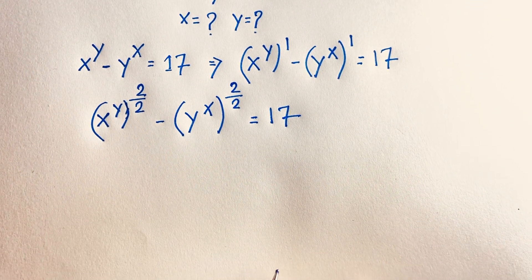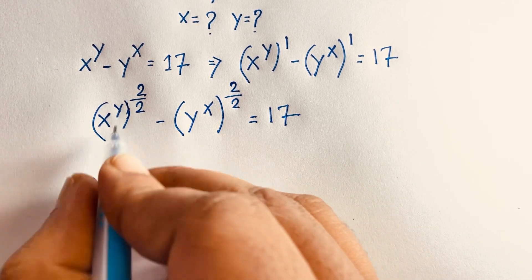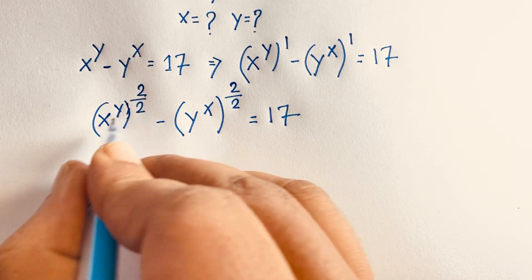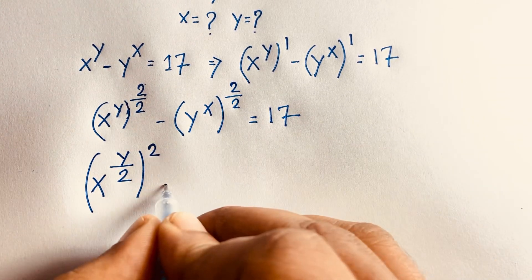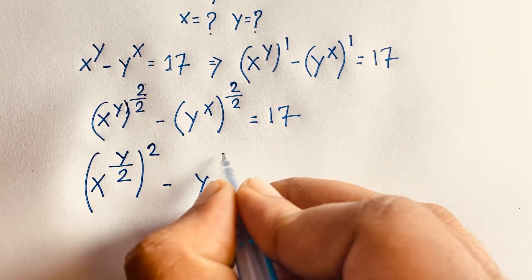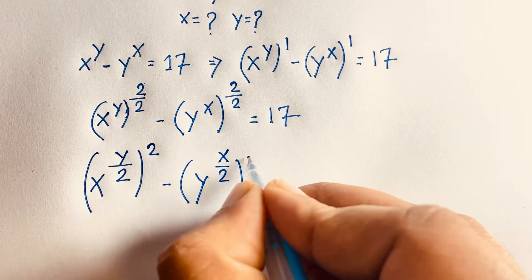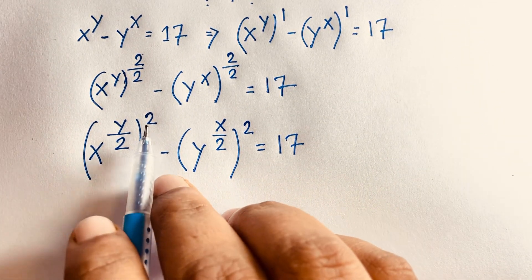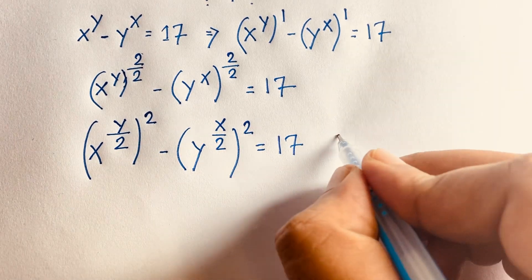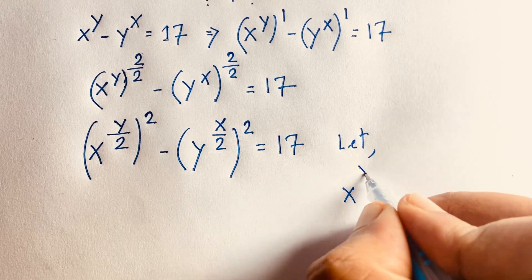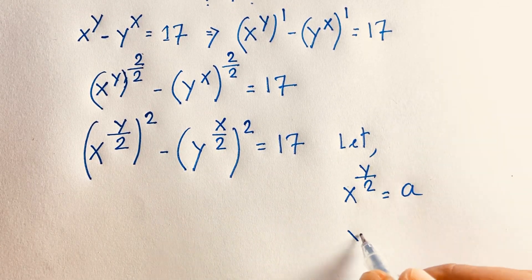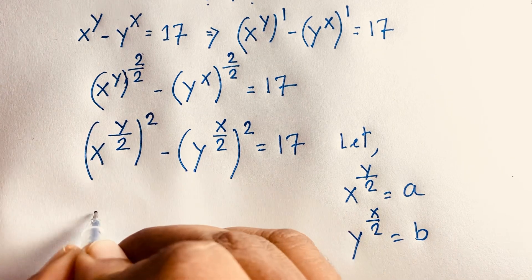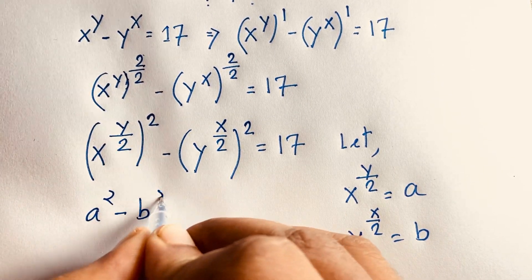I can see that here we have x to the power y and the exponent is 2 over 2. So this expression becomes x to the power y over 2, whole to the power 2, minus y to the power x over 2, whole to the power 2, is equal to 17. Now there is a square here and a square here. So let a equal x to the power y over 2, and b equal y to the power x over 2. Then we have a squared minus b squared is equal to 17.